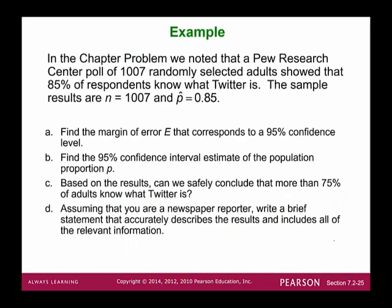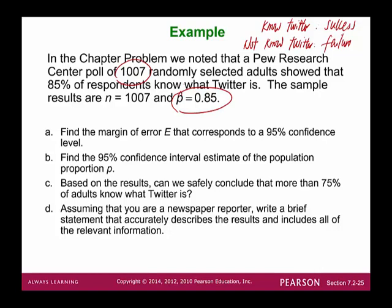Now let's look at a concrete example. The Pew Research Center poll of 1,007 randomly selected adults showed that 85% of respondents know what Twitter is — knowing Twitter is a success event, not knowing is a failure event. The sample results: n = 1,007 and p-hat = 0.85. We need to find the margin of error corresponding to a 95% confidence level.